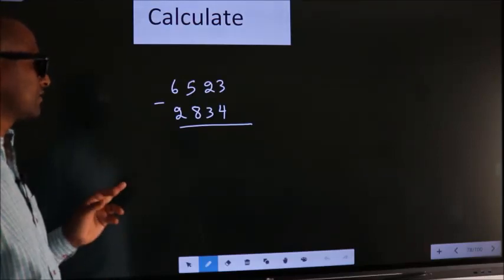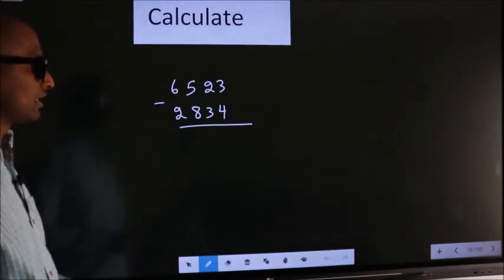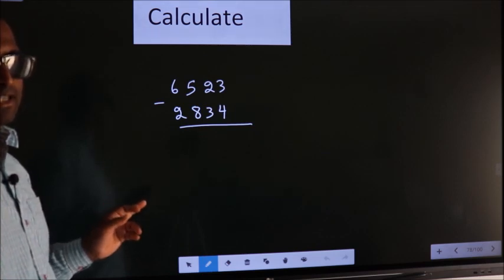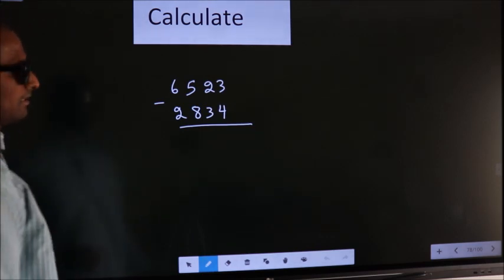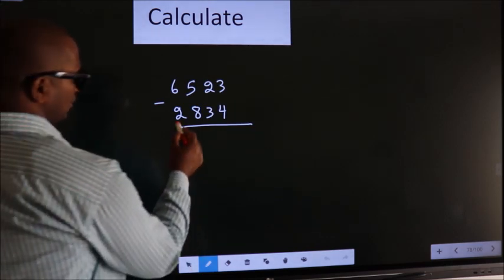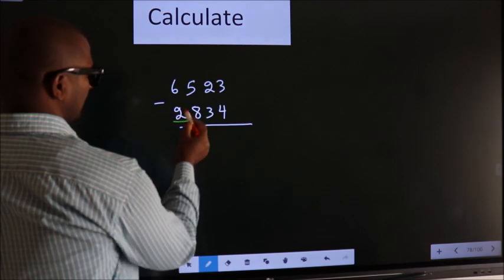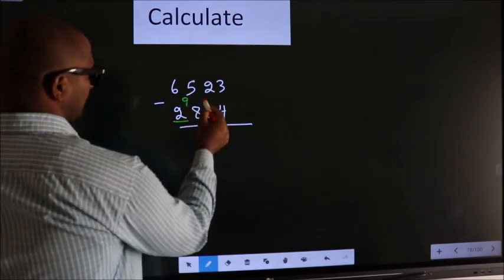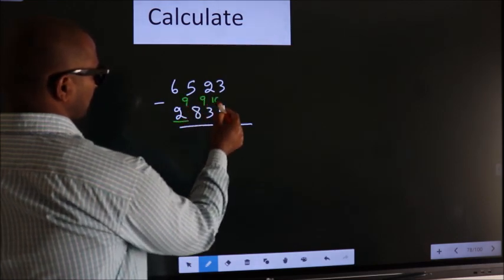Calculate 6523 minus 2834. How to calculate this faster? See, we should leave the first digit, and here you write 9, here 9, here 10.